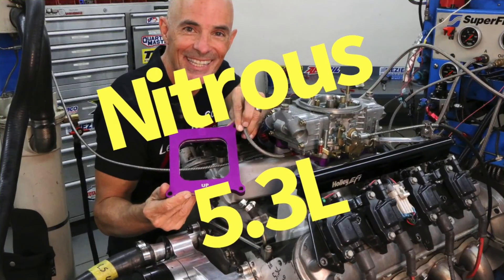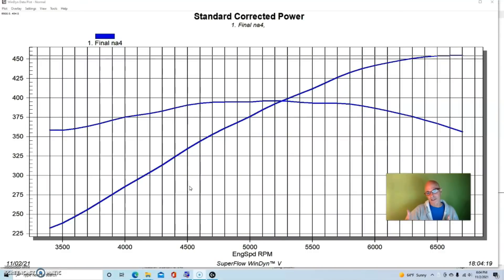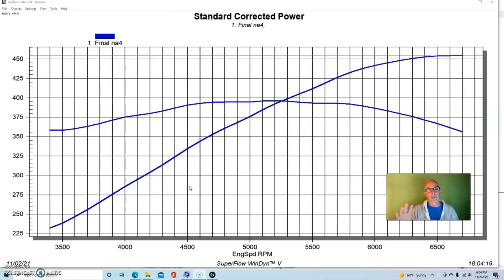To get things started with our power adders for the LS engine family, we're going to take a look first at nitrous. This was kind of a cool test. This is a junkyard 5.3 liter but we actually ran it carbureted. I did this test when I invited Kamikaze Chris from Street Outlaws over and we did a shootout on who could make the most power out of nitrous.